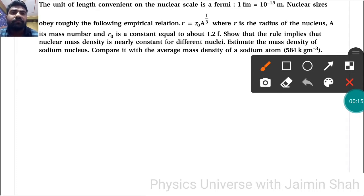A is the mass number and r₀ is a constant equal to about 1.2 Fermi. Show that the rule implies that nuclear mass density is nearly constant for different nuclei. Estimate the mass density of sodium nucleus and compare it with the average mass density of a sodium atom.